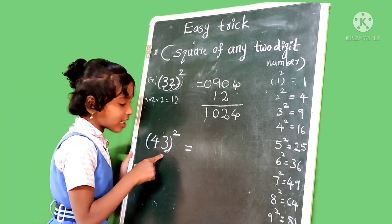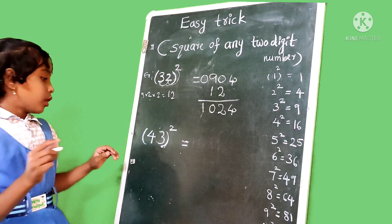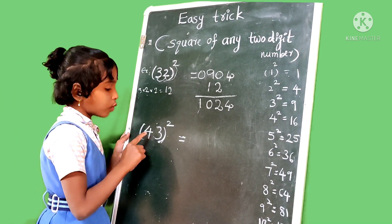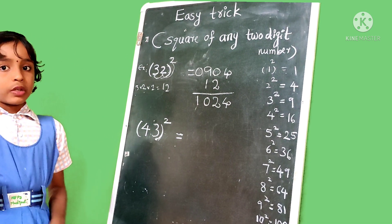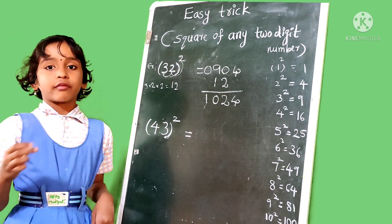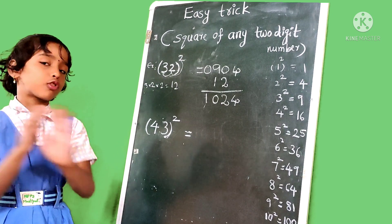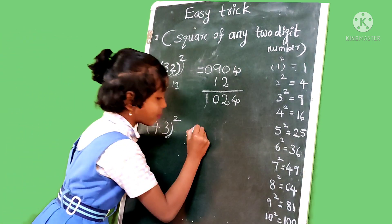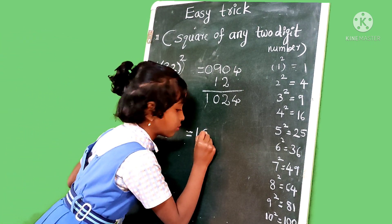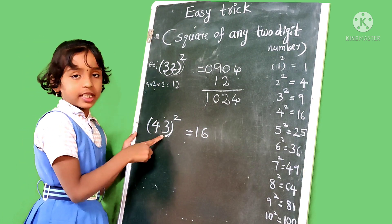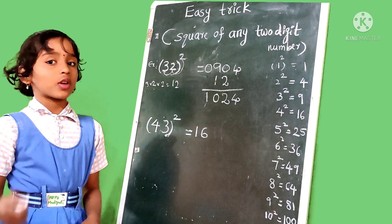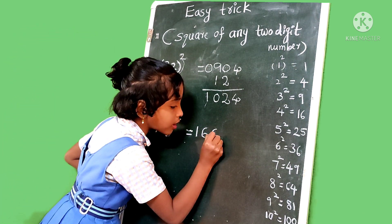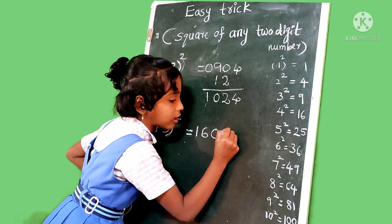Another example, 43 squared. Then find out the 4 squared. 4 squared is 16. So any two-digit numbers, we don't put, before that we don't put 0. Then 16. And 3 squared. Find out the 3 squared is 9. So 9 is the single-digit number. Before that we put 0 and write 9.